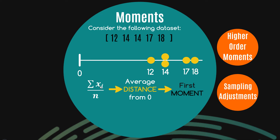This is actually what's called the first moment. If we figure this out using our data, we have μ'₁ — a way of describing the first moment of a distribution — which equals the sum of x divided by n, giving us 15. You can try this yourself: add all those values up, divide by 5, and you'll get 15. That's the first way of describing this data set. If I told you this data set on average is 15 units away from zero, you'd have some indication of where it sits.